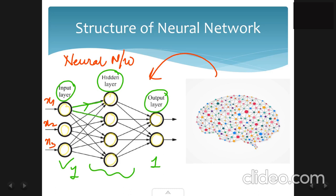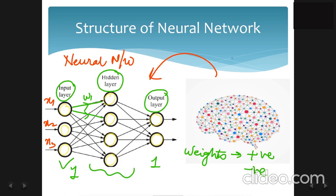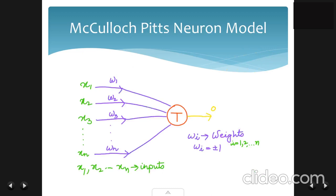All input neurons may not be connected to the neurons in the hidden layer, and similarly all hidden layer neurons may not be connected to the output layer neurons. These connections are weighted connections, so a weight is assigned to each connection. The weights can be positive or negative. Positive weights are called excitatory weights and negative weights are called inhibitory weights.